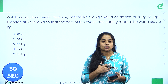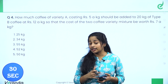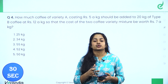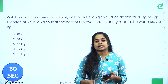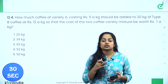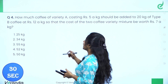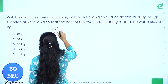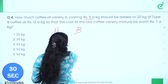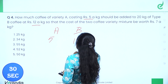How much coffee variety A costing 5 rupees per kg should be added to 20 kg of type B coffee at 12 rupees per kg so that the cost of the mixed variety is 7 rupees per kg? We have two varieties of coffee powder, A and B. A rate is 5 per kg and B rate is 12 per kg.